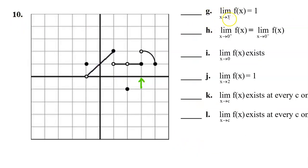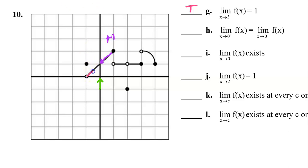Part G says the limit as x approaches 3 from the left is 1. As we approach 3 from the left we are approaching a y value of 1 and that's what it says the limit is — so this is true. Part H says the limit as x approaches 0 from the right equals the limit as x approaches 0 from the left. The limit from the right is 1 and the limit from the left is also 1, so those are indeed equal — that is true. That automatically implies that part I is true: the limit as x approaches 0 exists, because the limit from the left equals the limit from the right.